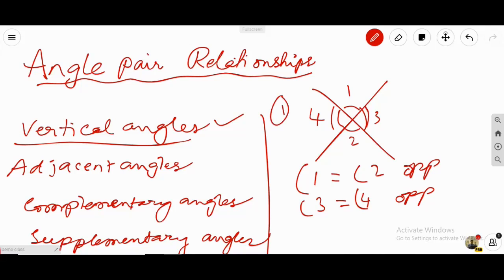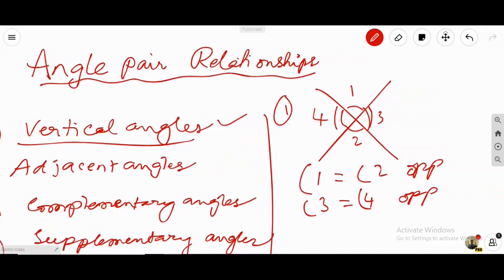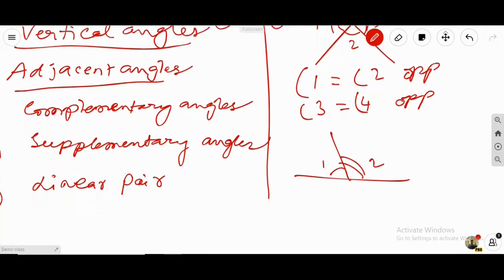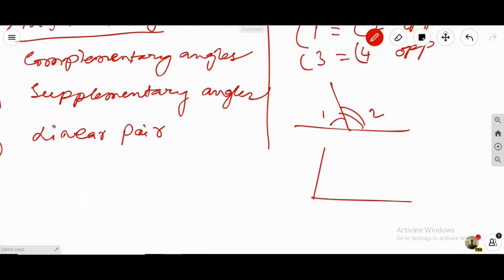Let's talk about adjacent angles. Angles which are side by side are called adjacent. Something like angle 1 and angle 2. So as long as the angles are side by side, we call them as adjacent angles next to each other.